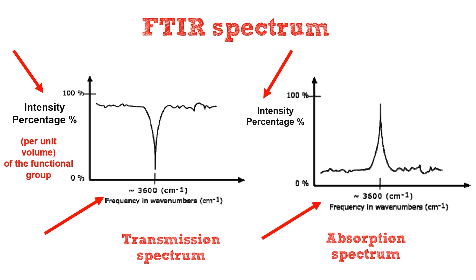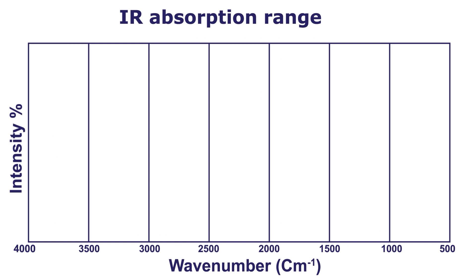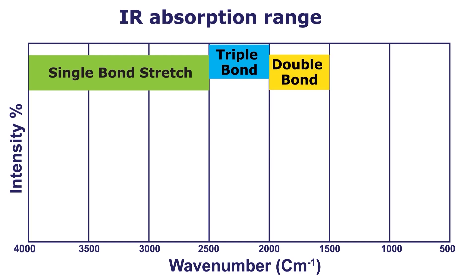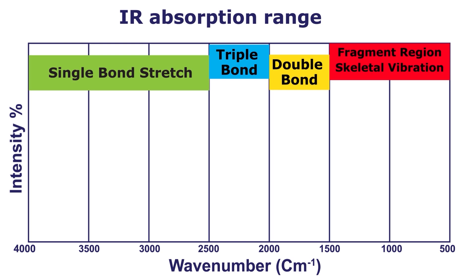The typical IR absorption range for a covalent bond is between 400 to 4000 reciprocal cm. The range from 4000 to 2500 reciprocal cm is where single bond stretch bands appear. Triple bonds appear from 2500 to 2000 reciprocal cm. Double bond bands appear between 2000 to 1500 reciprocal cm. The region between 1500 to 500 reciprocal cm is the fingerprint region where skeletal vibrations occur, though the overlap of skeletal vibrations makes it hard to interpret.